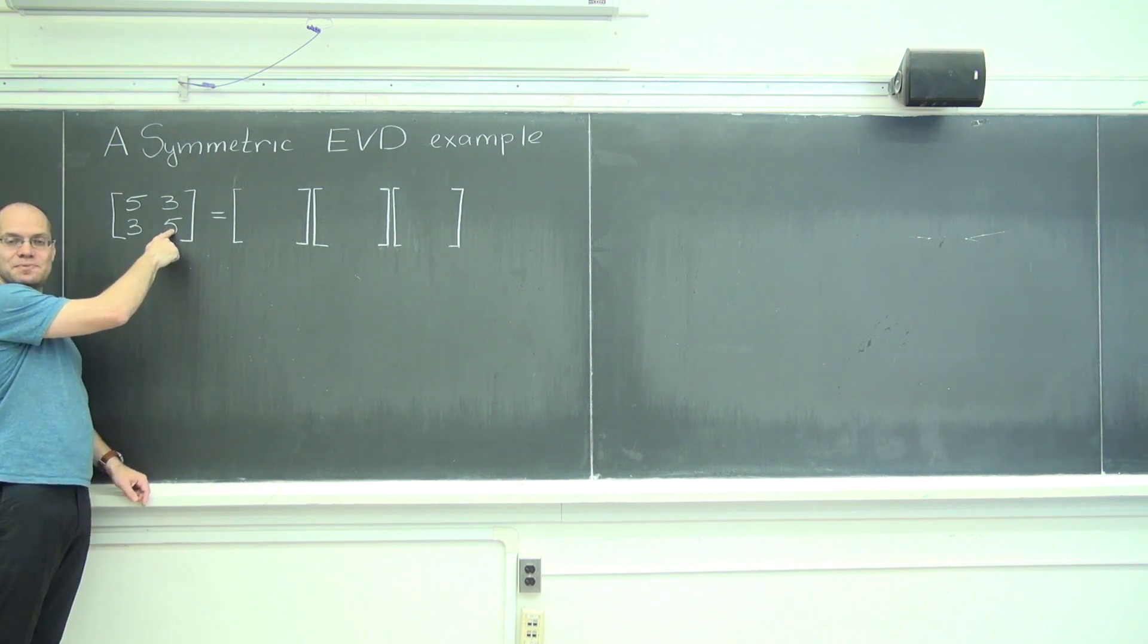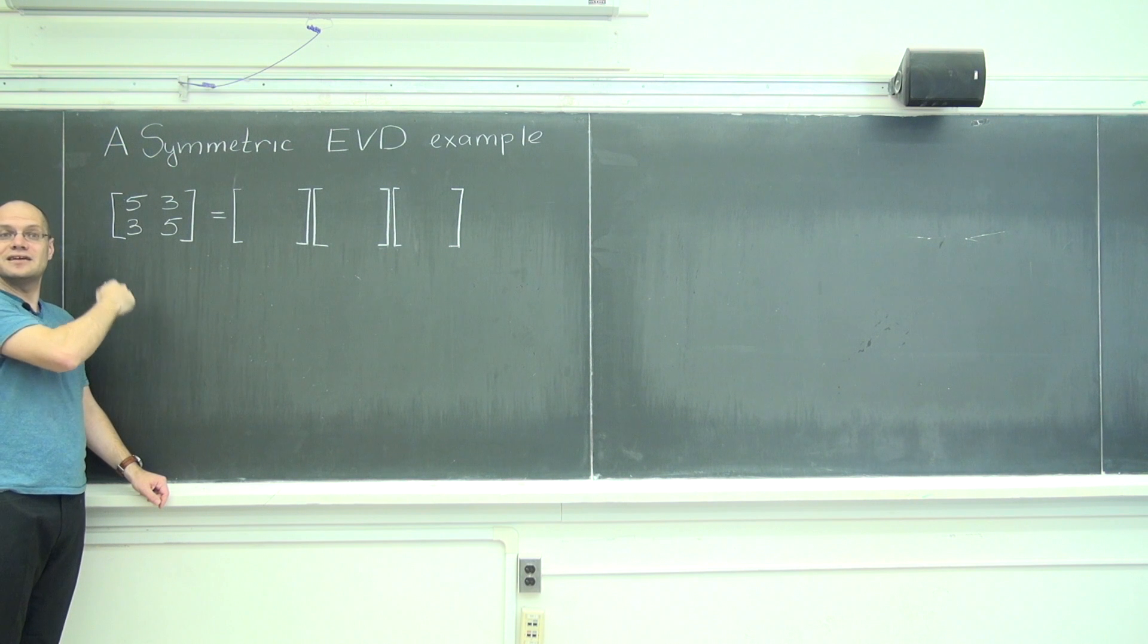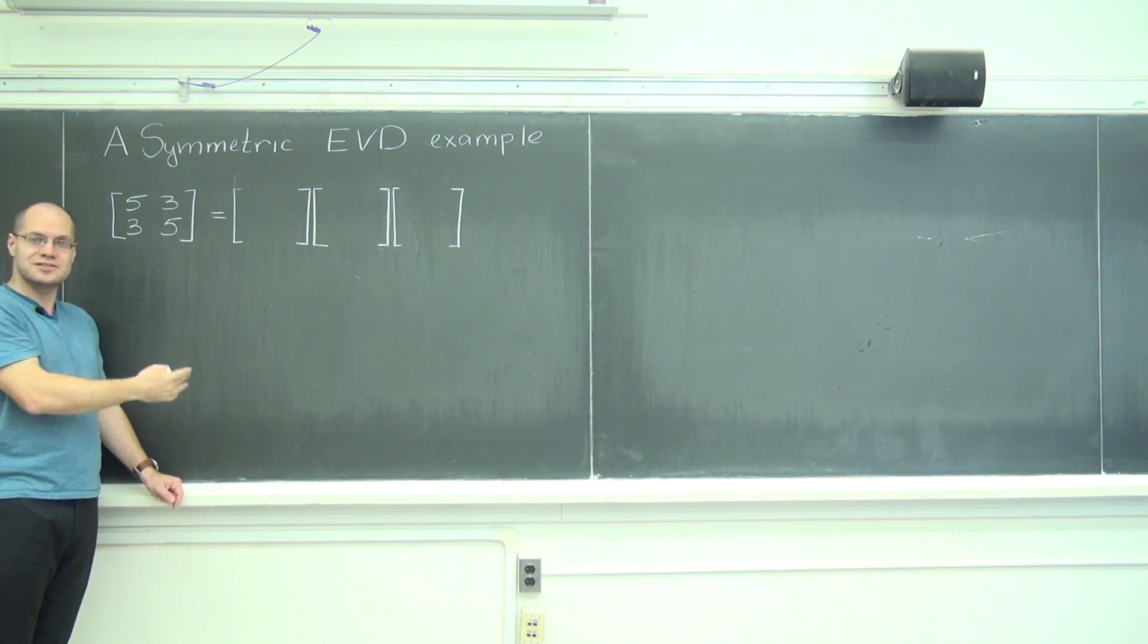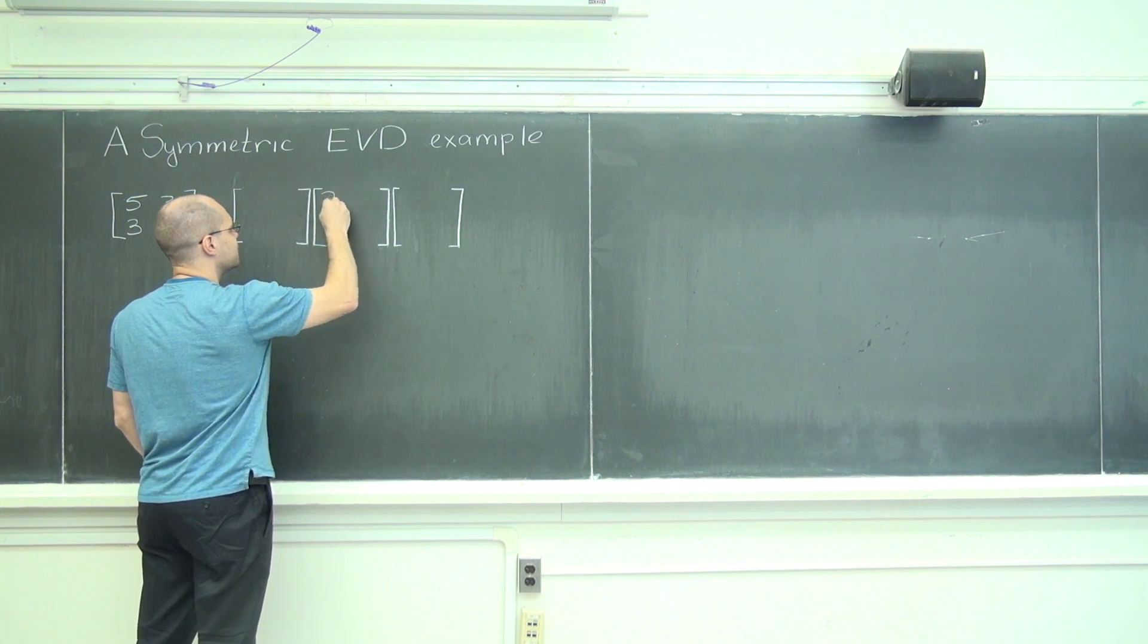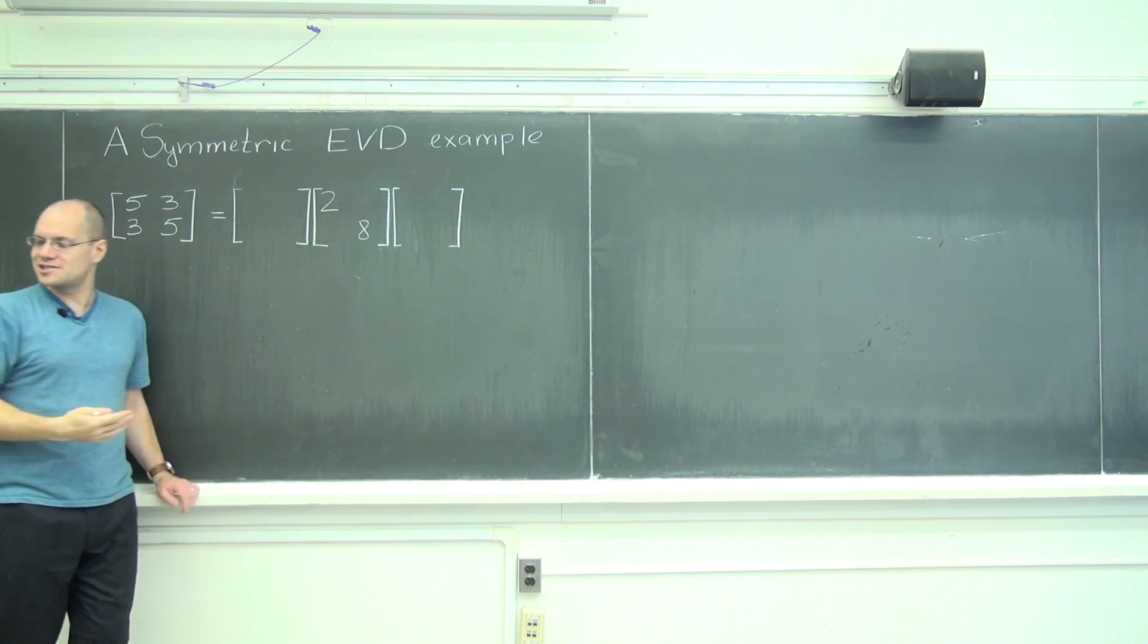And then from the trace being 10, you can guess that the other eigenvalue is 2, because they add up to the trace. So 8 and 2, or 2 and 8 if we want to do them in increasing order. So that's the matrix lambda.